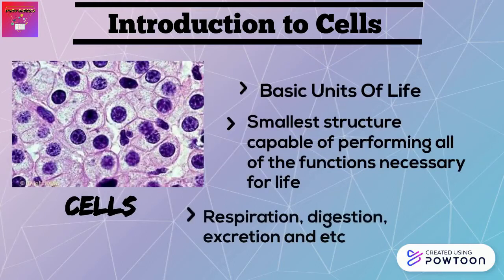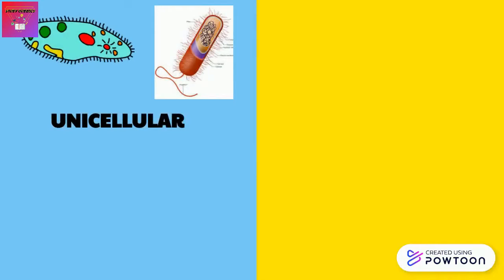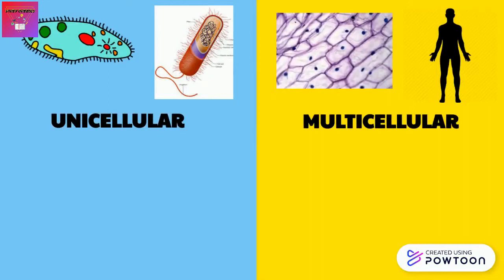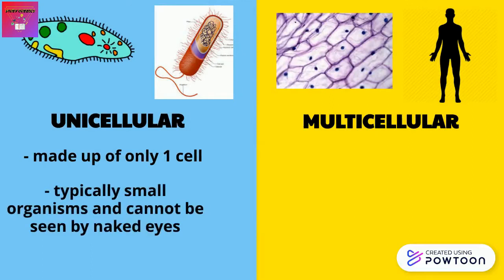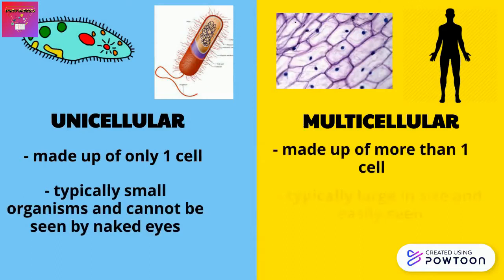An organism can consist of only one cell or millions and millions of cells. An organism with only one cell is called a unicellular organism — for example, bacteria and protozoa. Unicellular organisms are typically small and cannot be seen by the naked eye. An organism with more than one or millions of cells is called a multicellular organism, such as humans, animals, plants, and many more. Multicellular organisms are typically large in size and easily seen.